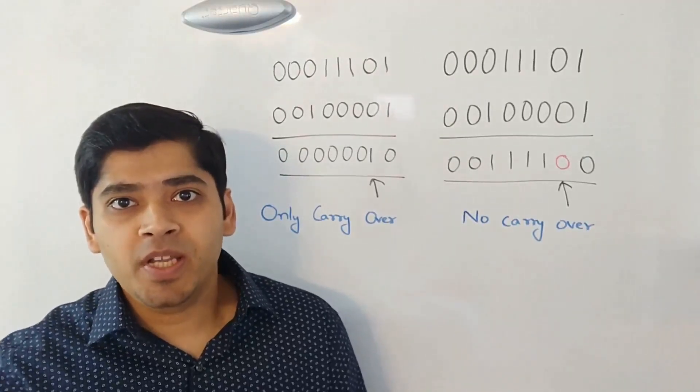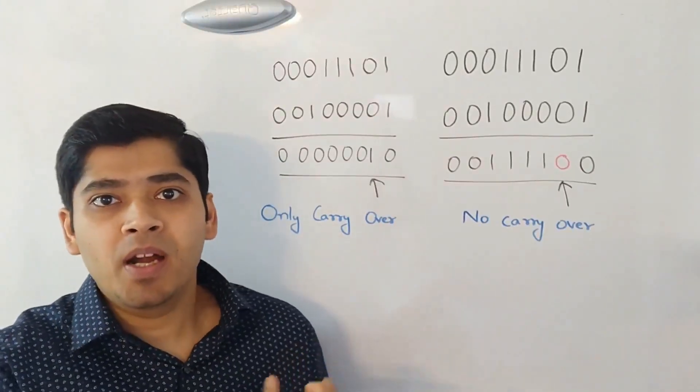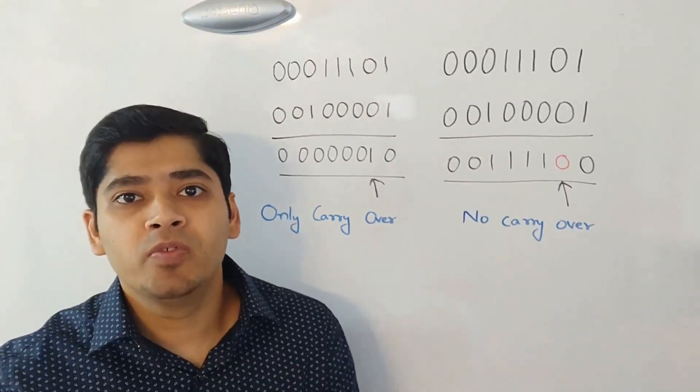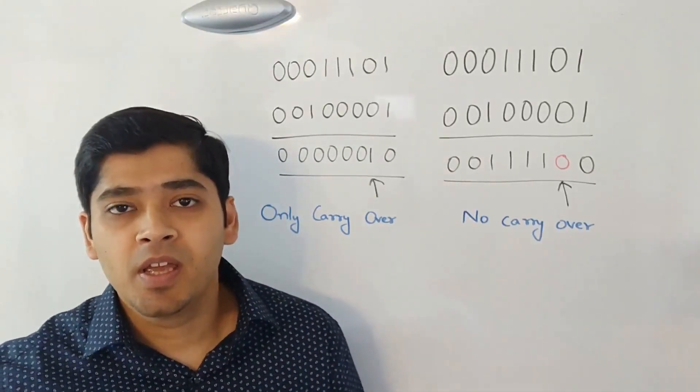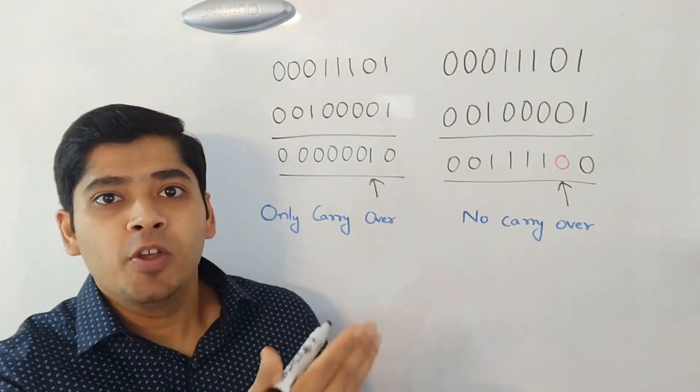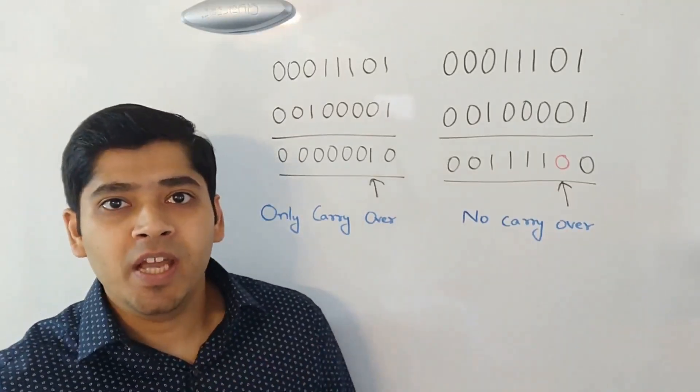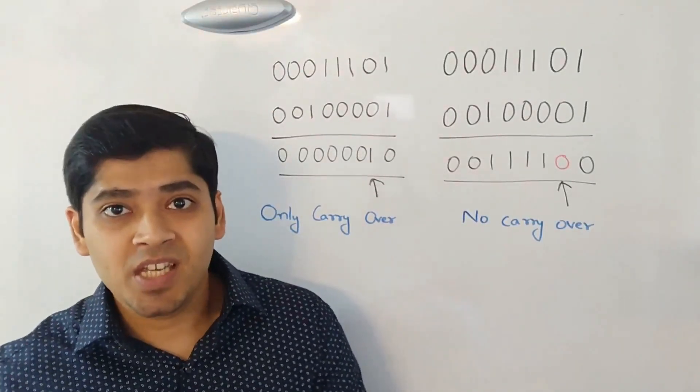Well, you need to realize that if the only carry over part is more than zero, then only you will be adding it to the non carry over component. You can keep repeating the same process of no carry over and only carry over, unless and until the only carry over becomes just a zero.